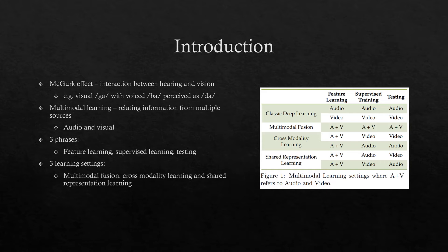The multimodal fusion setting is where audio and visual data is available at all phases. In cross-modality learning, all data is only available during feature learning, and only a single modality is available during supervised learning and testing. The shared representation setting uses different modalities to capture whether correlations exist across them.